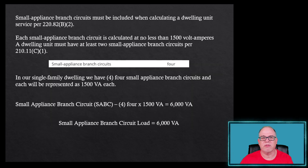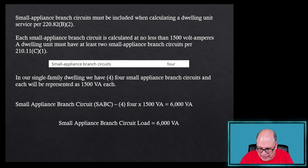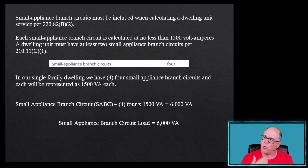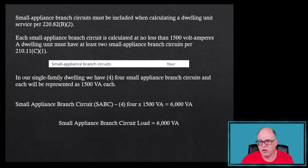When doing the small appliance calculation, as you can see in 220.82B2, we know that 210.11(C)(1) requires at least two small appliance branch circuits. In our case, we've got four. Each small appliance branch circuit is 1,500 VA. Since we've got four of them, we do four times 1,500 — that's 6,000 VA. So our small appliance branch circuit load is 6,000 VA.